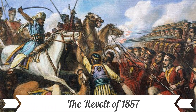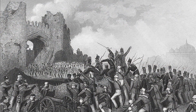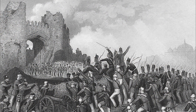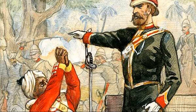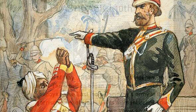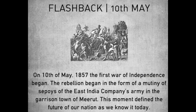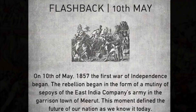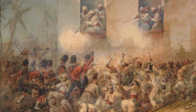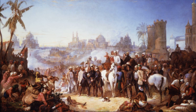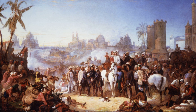The Revolt of 1857, also known as the First War of Independence or Sepoy Mutiny, marked a pivotal moment in India's struggle against British colonial rule. Beginning in Meerut on May 10, 1857, and spreading across the Indian subcontinent, the revolt was a response to various social, economic, and political grievances that had festered over years.